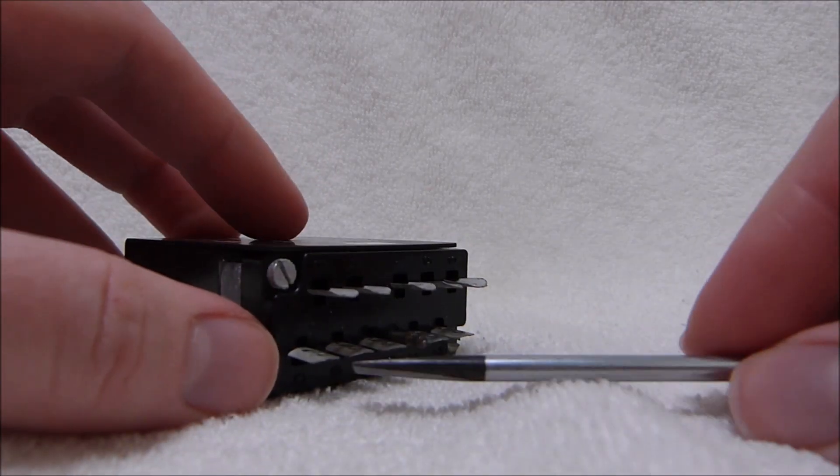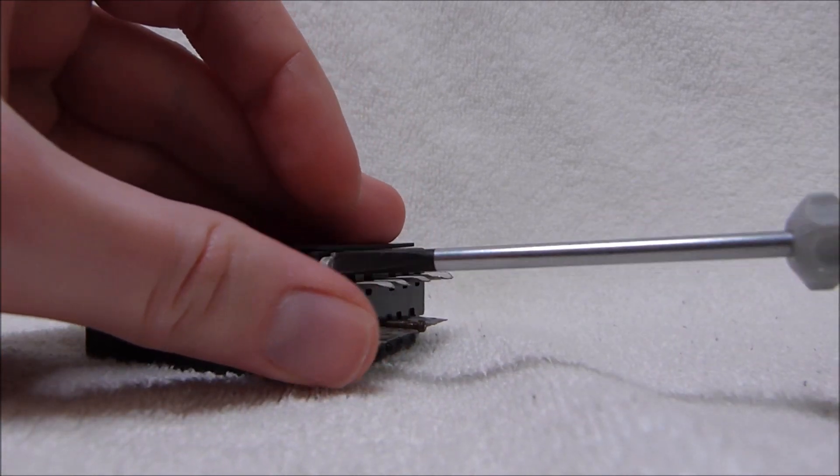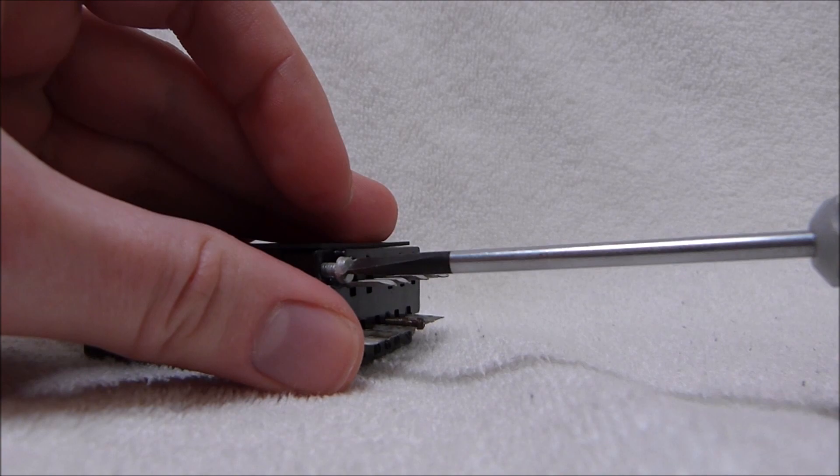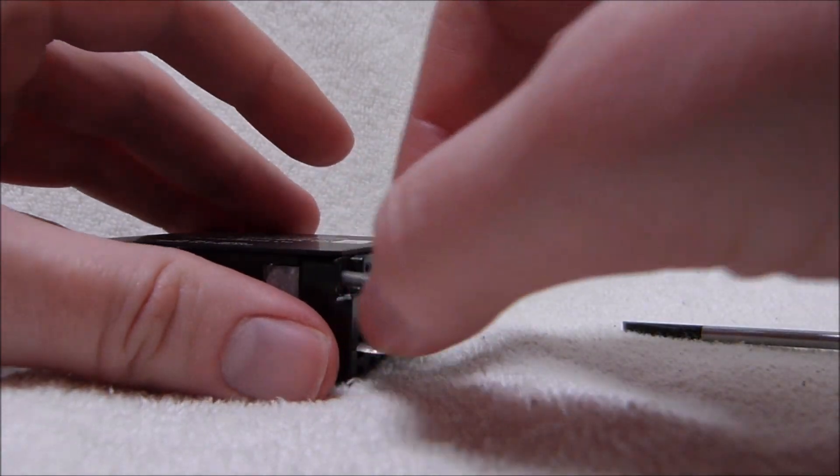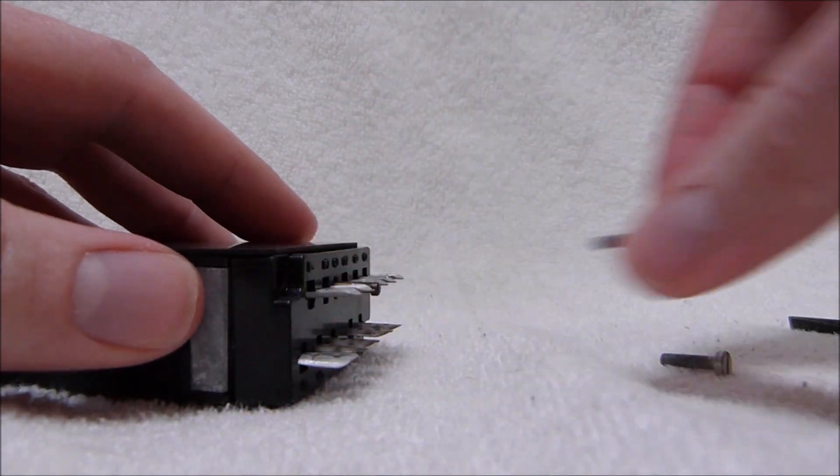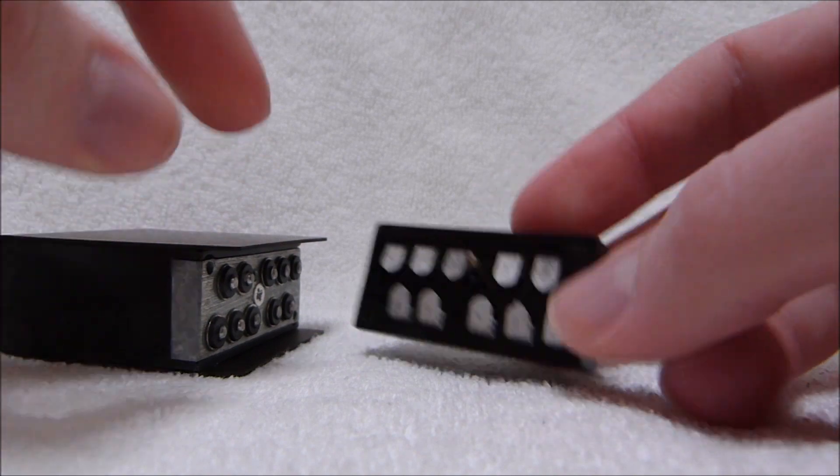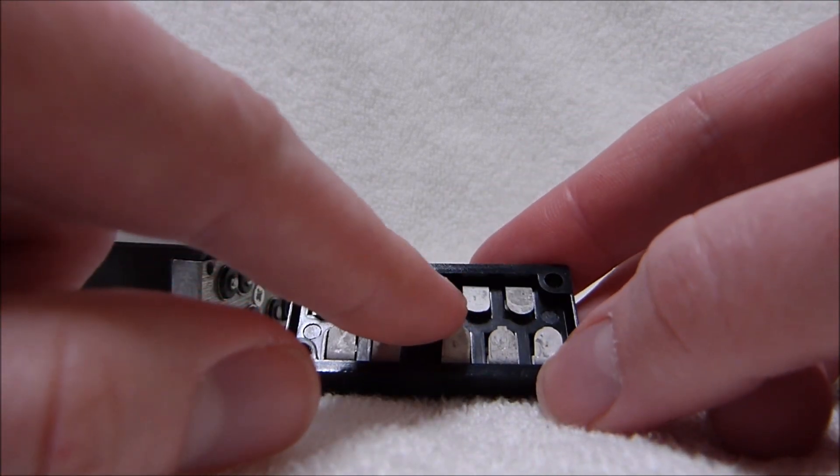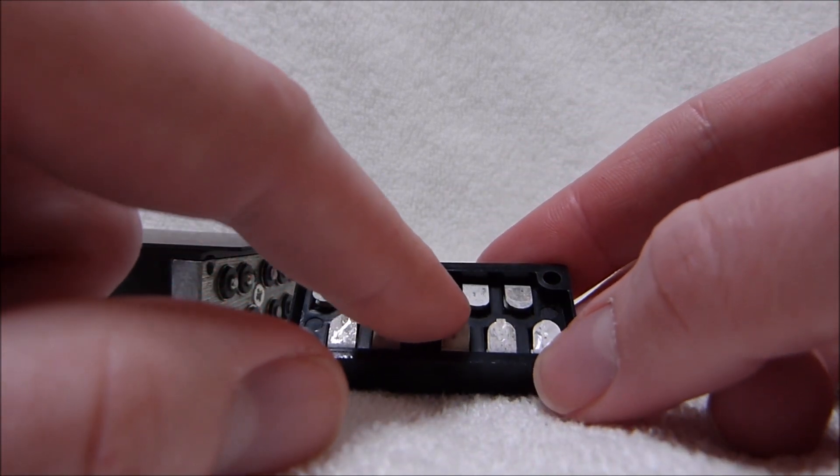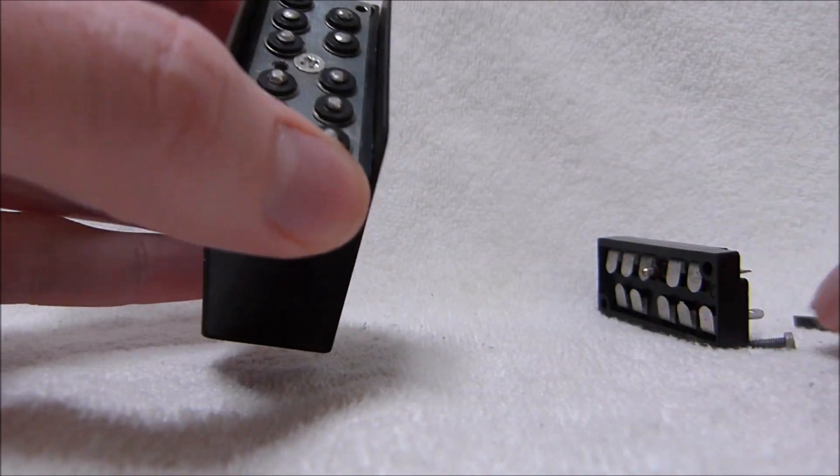To access the incandescent bulbs you just take out these screws in the corners. There's only two of them. Then pull this straight back. This is the common ground connection or common positive. Either way it doesn't matter, they're incandescent displays.